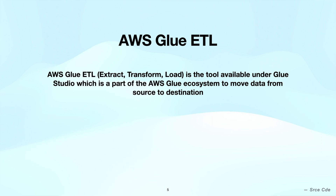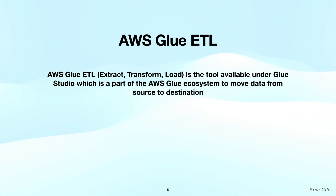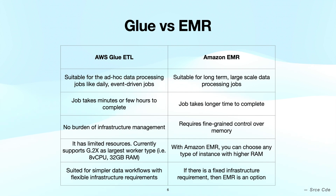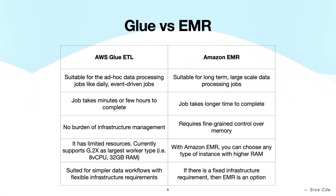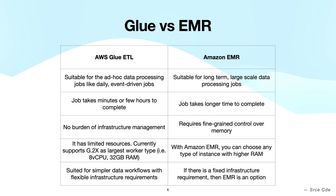You might ask: is Glue ETL a replacement of EMR? The answer is no. So when should you use Glue ETL versus EMR? AWS Glue ETL is suitable for ad-hoc data processing jobs, whereas Amazon EMR is suitable for large-scale data processing jobs. AWS Glue ETL is good for jobs which take minutes to a couple of hours to complete, whereas EMR is well suited for jobs that could take days to complete.